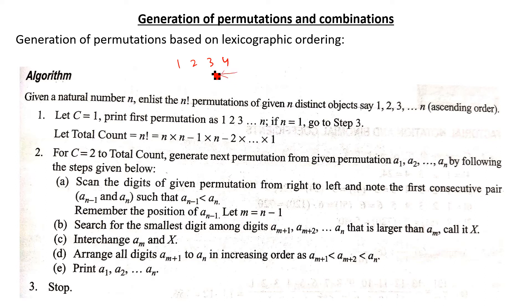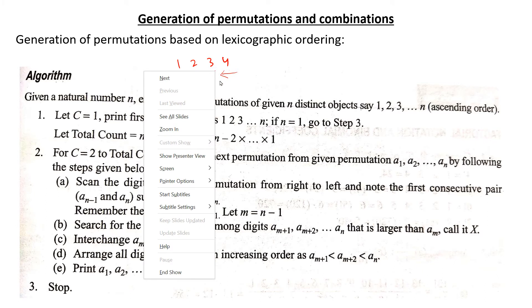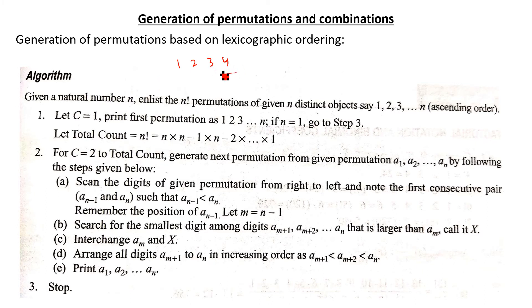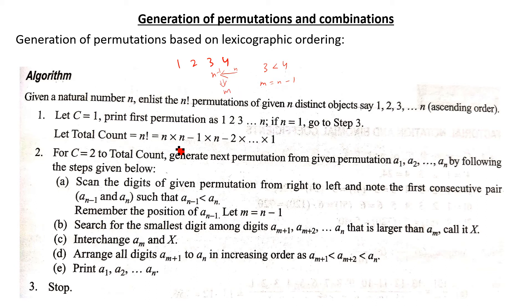We scan from right to left and check whether a_{n-1} is less than a_n. The condition is true: a_{n-1} = 3 is less than a_n = 4. So this is the (n-1)th position and this is the nth position. Remember the position of a_{n-1}; let m equal n minus 1.